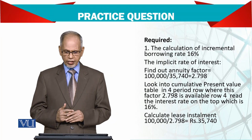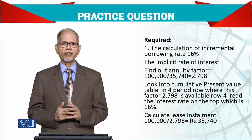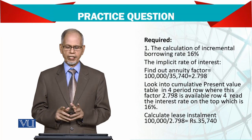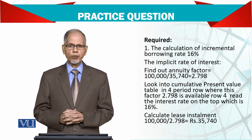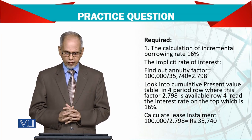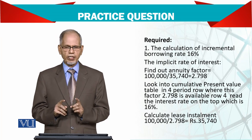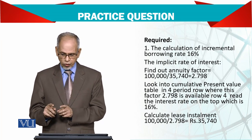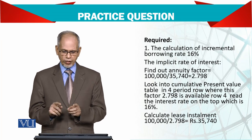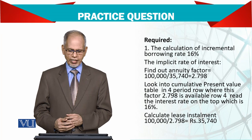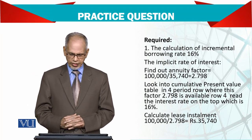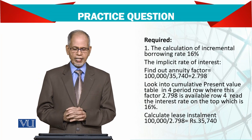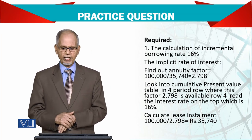To find the implicit rate of interest, find the annuity factor: divide the machine value of 100,000 by the lease payment of 35,740, giving a factor of 2.798. Look in the present value table for the four-period row and find where this factor lies — it appears at 2.798 on row four, with the interest rate at the top reading 16%. To calculate lease installments, simply divide the asset value by this factor to get 35,740.